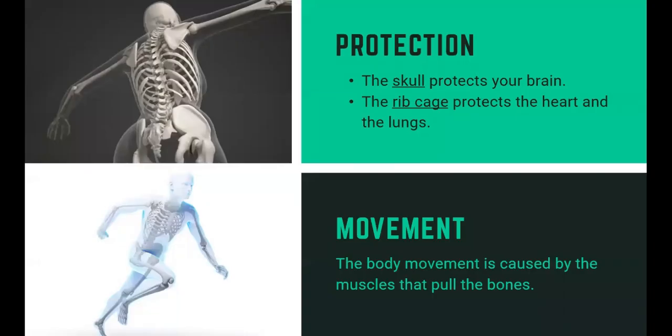Next is protection. The bone on your head is the skull — it protects your brain. The ribcage protects the heart and the lungs, while the vertebral column protects the spinal cord. Your bones protect many of your vital organs.